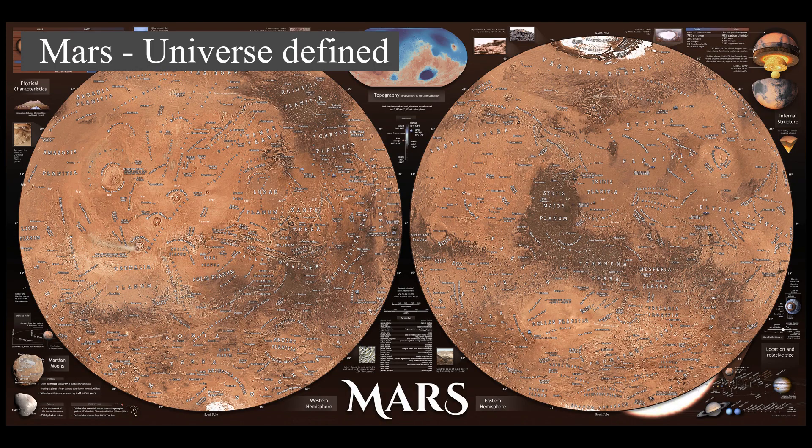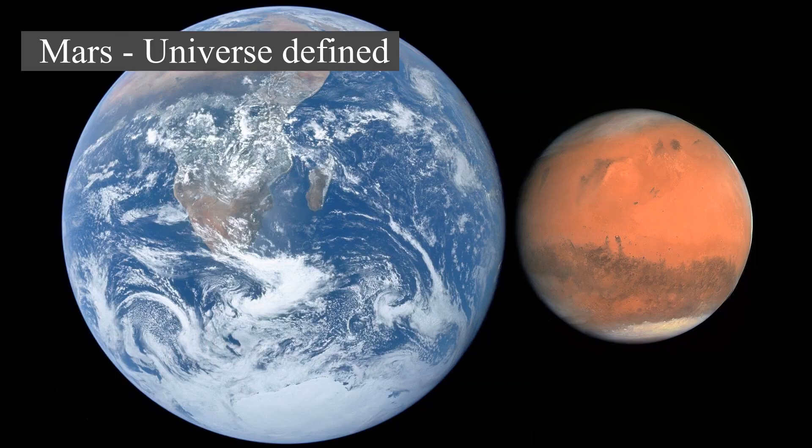Days and seasons on Mars are comparable to those of Earth, as the planets have a similar rotation period and tilt of the rotational axis relative to the ecliptic plane. Liquid water on the surface of Mars cannot exist due to low atmospheric pressure, which is less than one percent of the atmospheric pressure on Earth. Both of Mars's polar ice caps appear to be made largely of water. In the distant past, Mars was likely wetter and thus possibly more suited for life, though it is unknown whether life has ever existed on Mars.